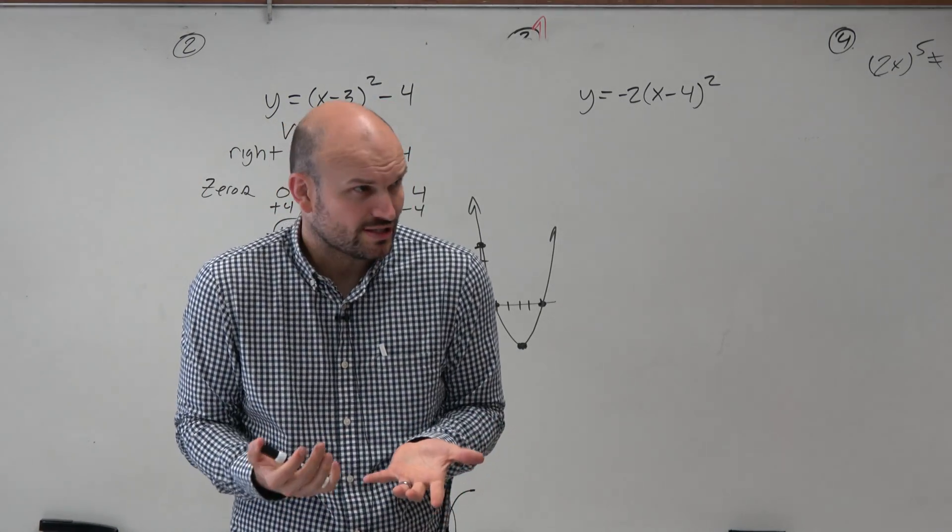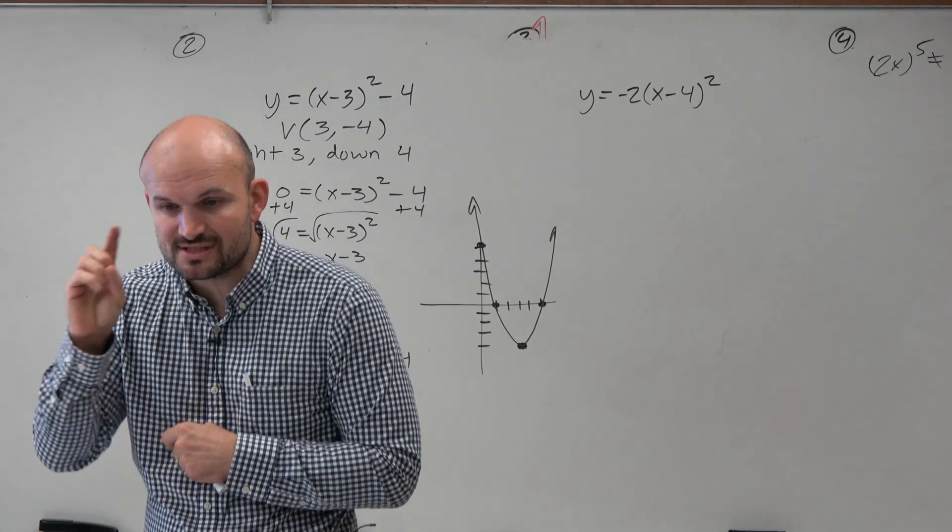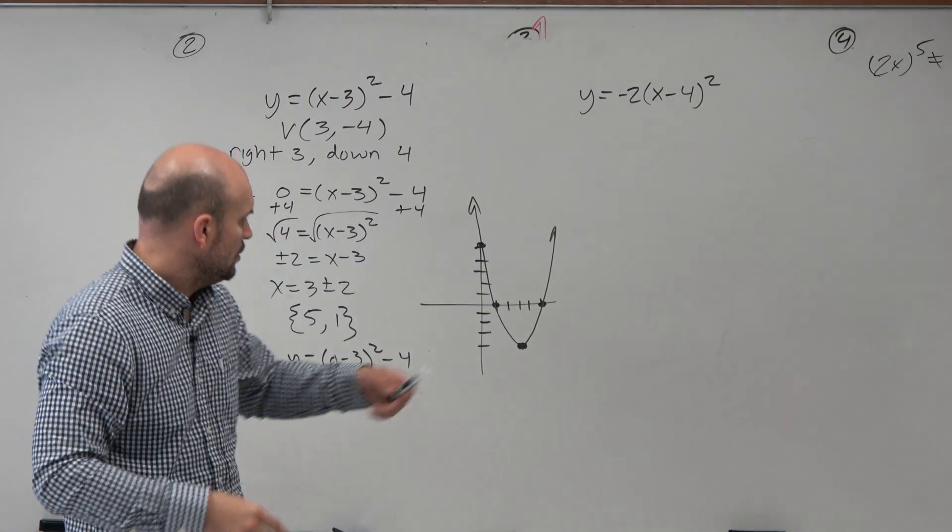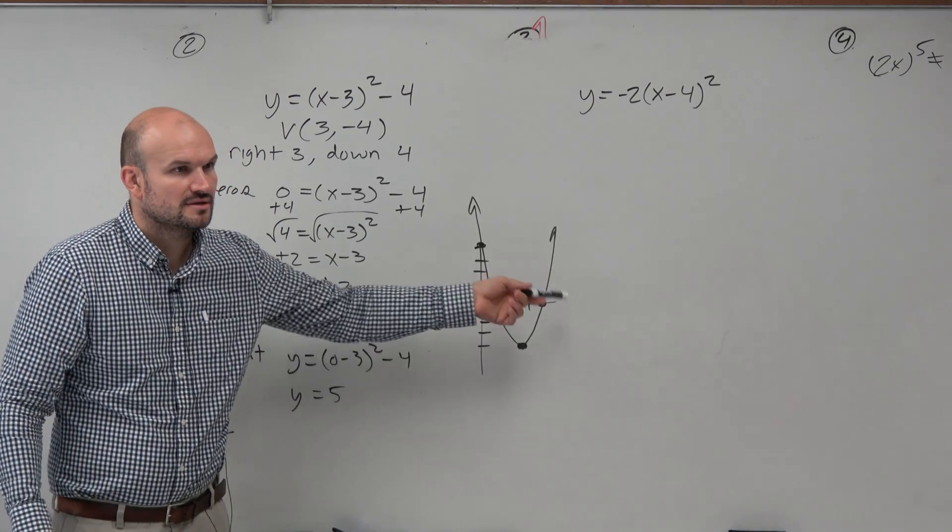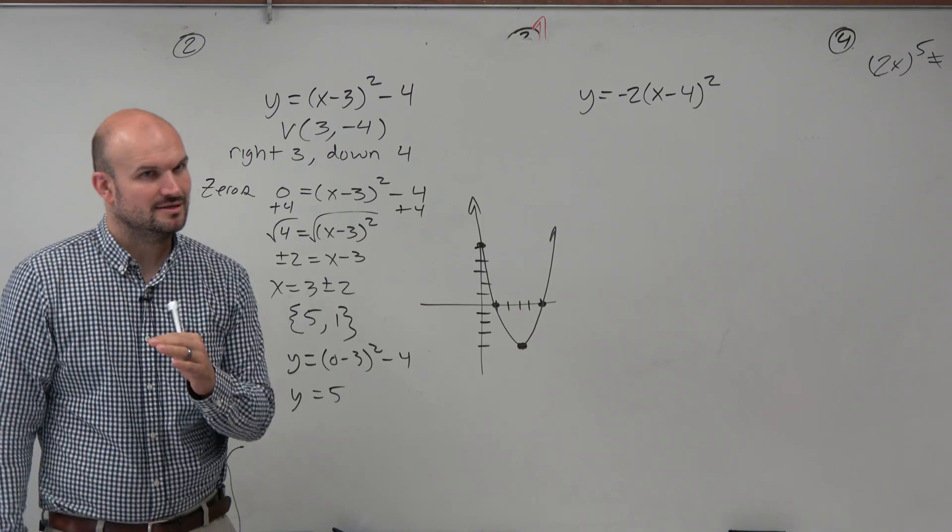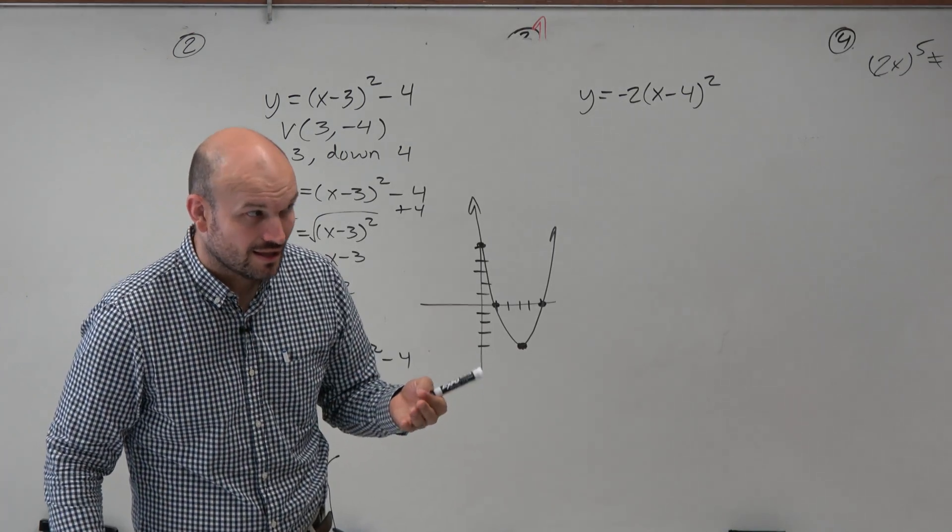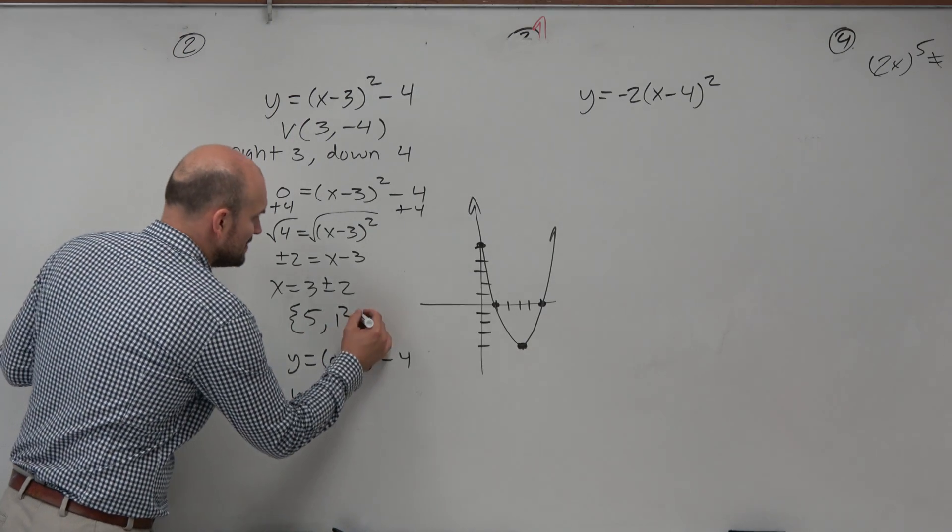I mean, we should know what this graph looks like based on this information. Now, to understand the multiplicity question, what is the multiplicity of those zeros? How do they cross? Do they cross like an s-curve? Do they bounce like a quadratic? Or do they cross like a line? So they both have a multiplicity of 1.